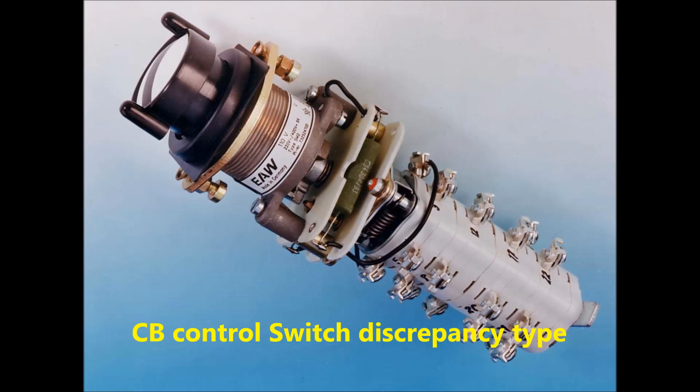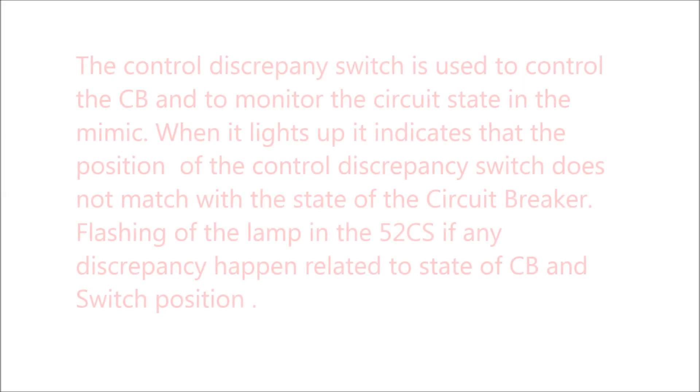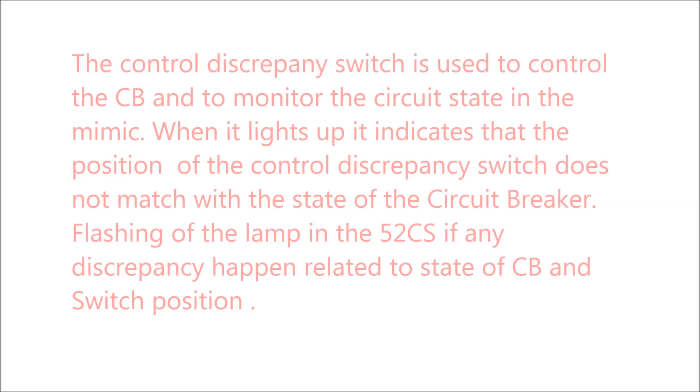The 90 degree rotary control switch is used for acknowledgement signaling switch, and the 45 degree press and twist switch is used to control the circuit breaker. The control discrepancy switch is used to control the CB and to monitor the circuit state in the mimic.